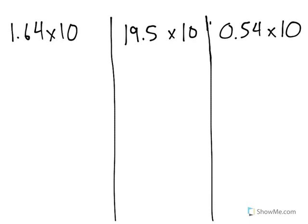These three problems involve multiplying decimals by the number 10. When you have a decimal point and you're multiplying by 10, it's pretty simple.